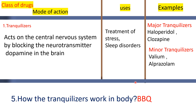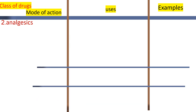How do tranquilizers work? The neurotransmitter dopamine is blocked by tranquilizers. The second type is analgesics. It is very important. There are two types.